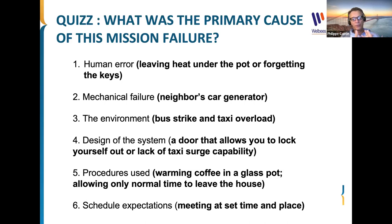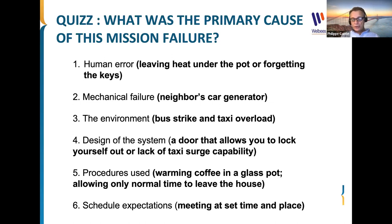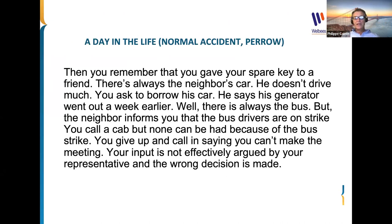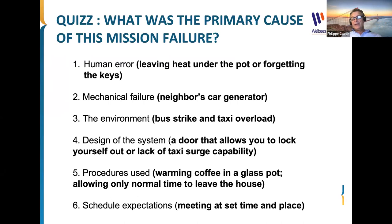We can only explain the accident by considering all the multiple causes together — we cannot have a single cause describing the accident. It's a very important example showing we need to consider the interaction of causes rather than trying to find only one. In the past, we tried to look at one cause to explain all of the accident — but systems are too complex for that. Even small things, like a coffee pot, can start a chain producing big consequences — the butterfly effect.